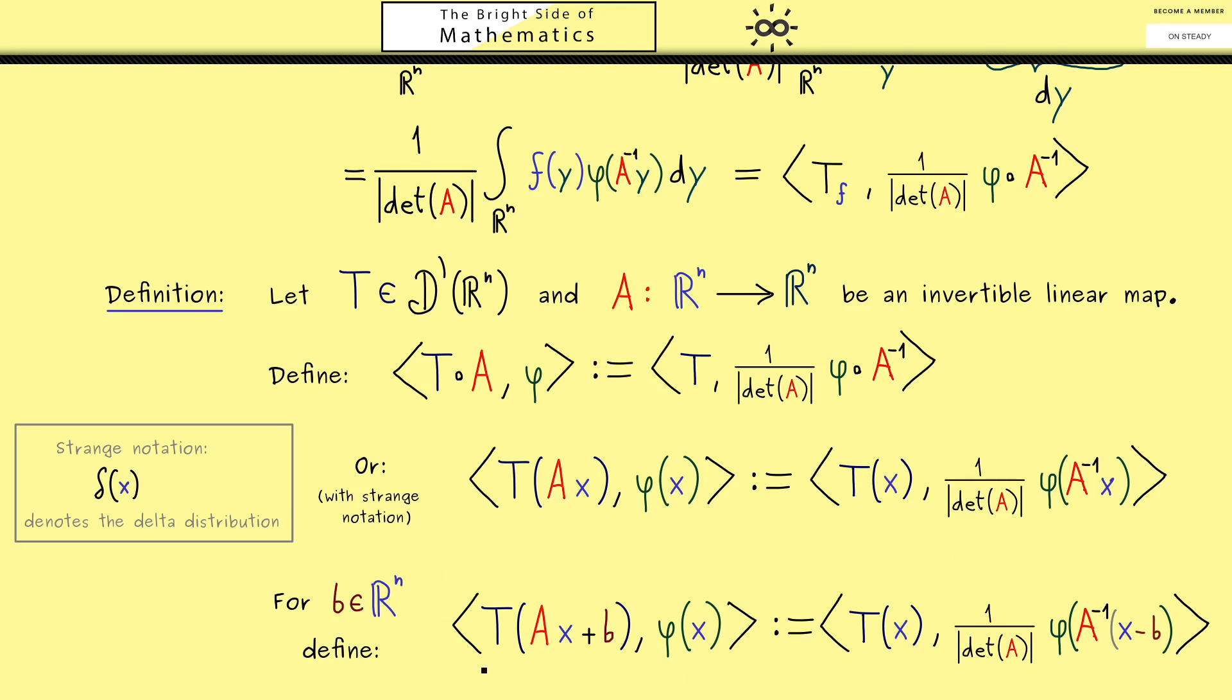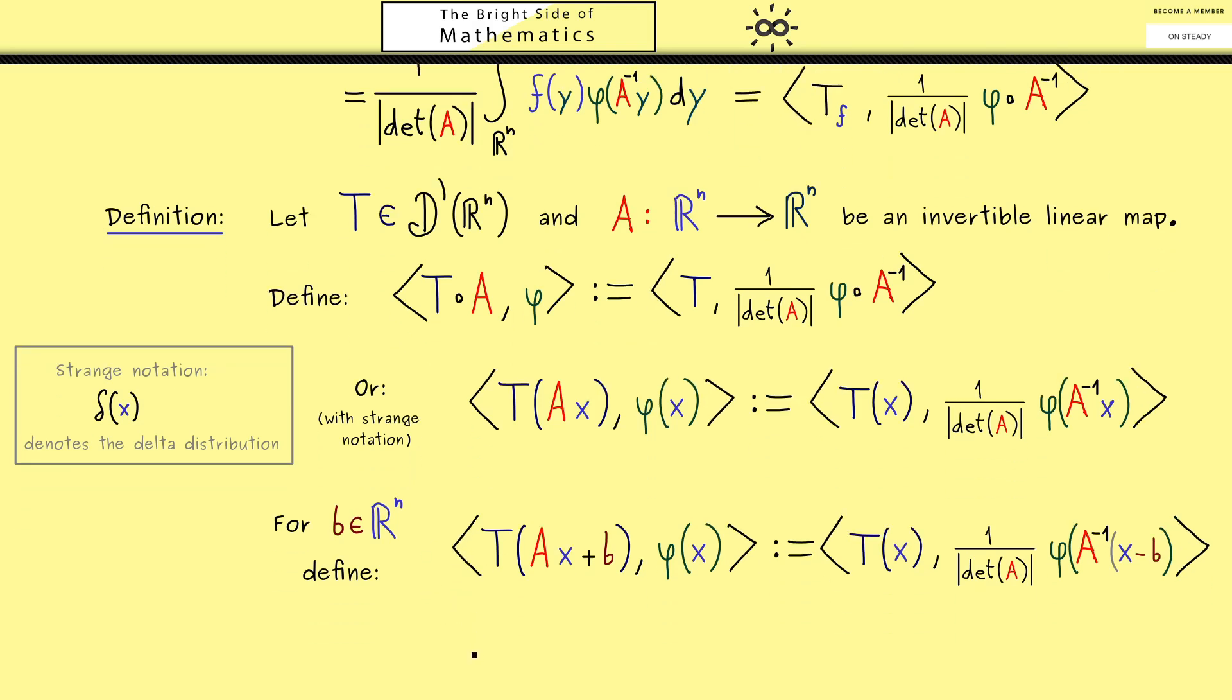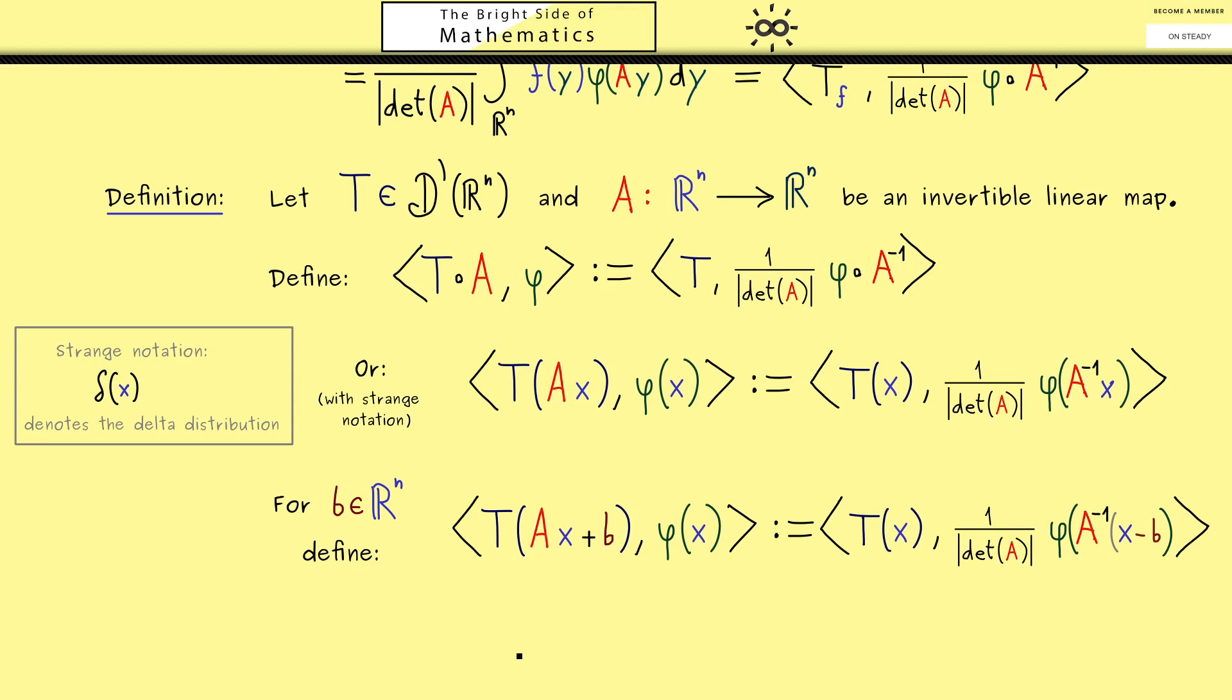So after this you might ask can we do this even more general. Indeed you might already know some coordinate transformations that are not linear. Moreover you might also note that the reasoning with the change of variables formula from above also works more generally. There we just need a smooth bijective function g.